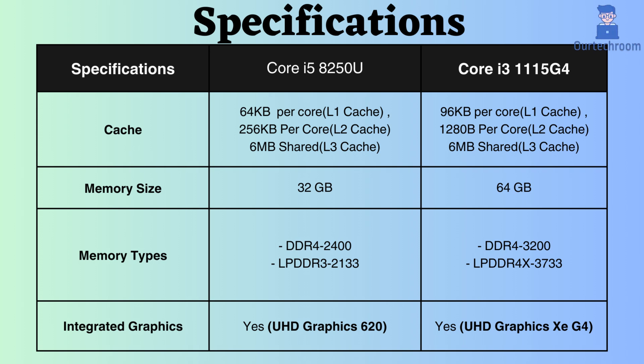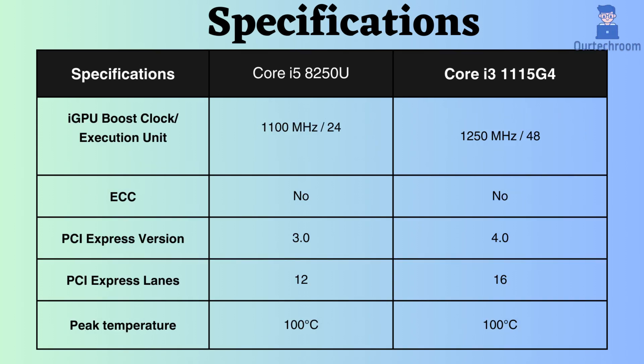Integrated graphics are supported by both CPUs, with the graphics frequency of the Core i3 at 1250 MHz and that of the Core i5 at 1100 MHz. Additionally, in terms of execution units, the Core i3 surpasses the Core i5, boasting 48 execution units compared to the latter's 24. Consequently, for graphics-related tasks as well, the Core i3 outperforms the Core i5.